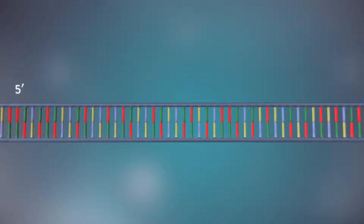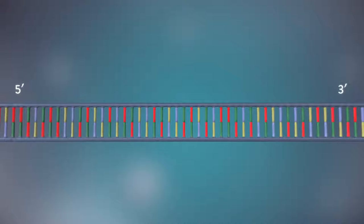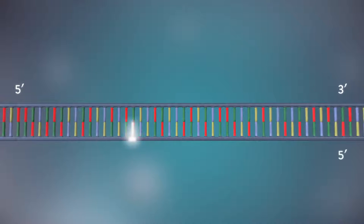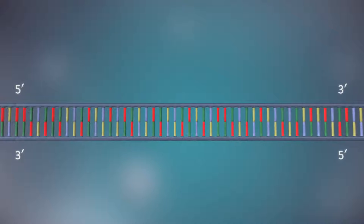Each strand has a five prime end and a three prime end. The two strands run in opposite directions. This determines how each strand of DNA is replicated.